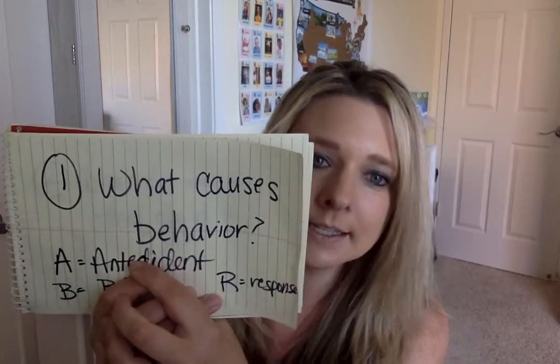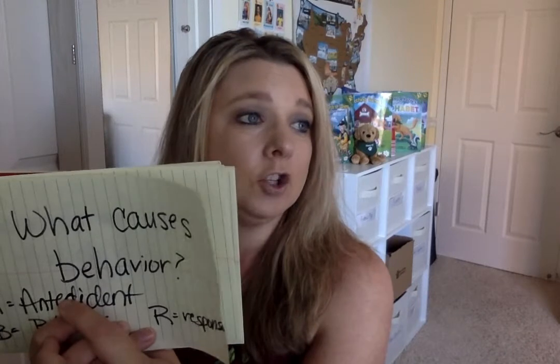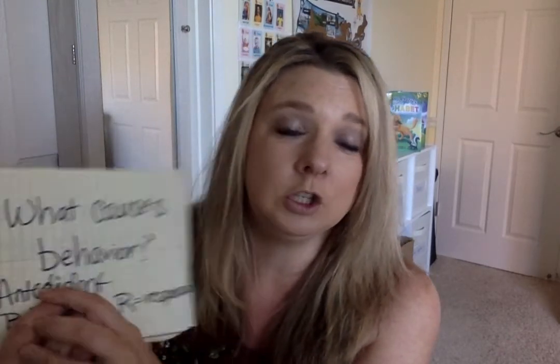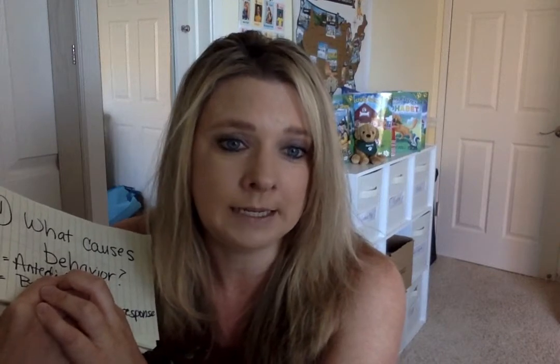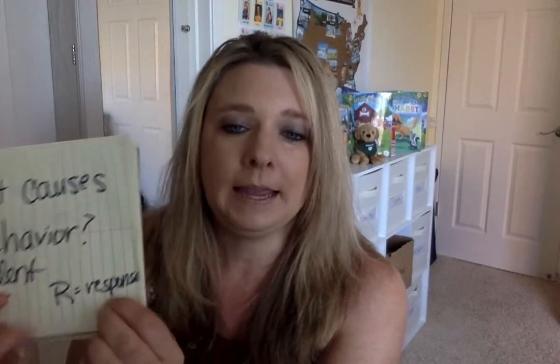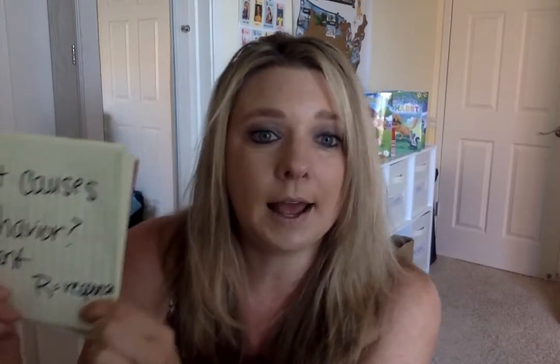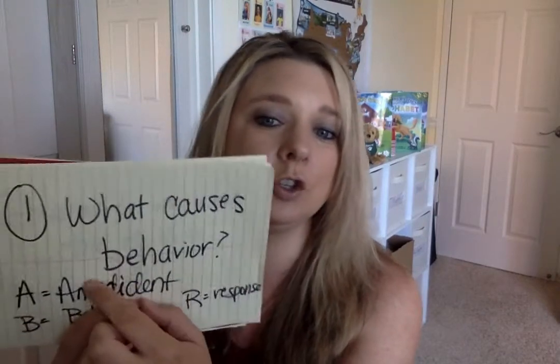The antecedent is what happens before the child does the behavior. For instance, Johnny always bites Susie when she has the red ball and he wants it. So the antecedent is the red ball. The behavior is him biting. And the response is what I do, or what Sally does, in response to the bite.